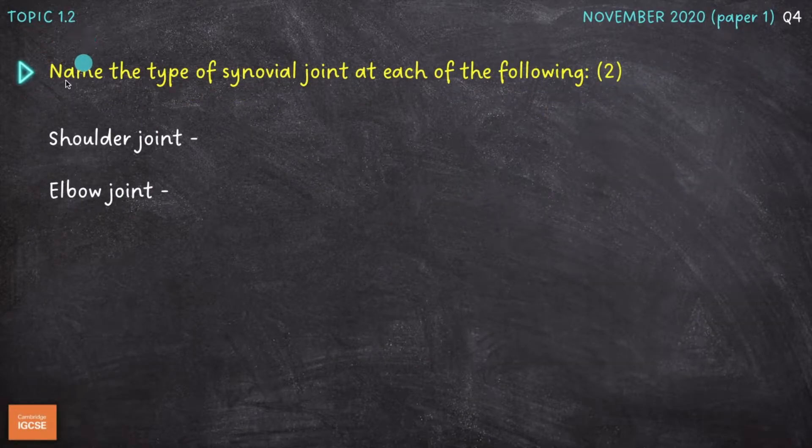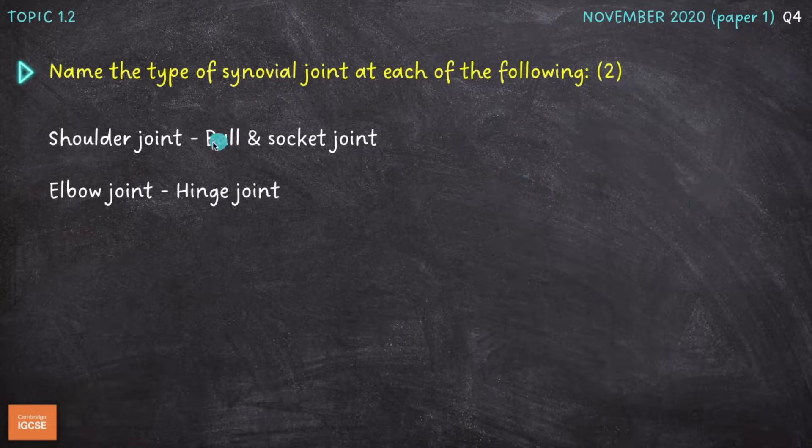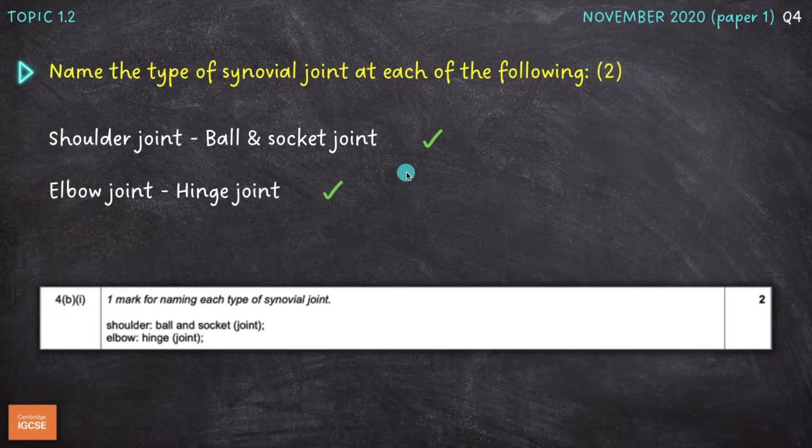Next question, topic 1.2. Name the type of synovial joint at each of the following. So the shoulder joint and the elbow. Which type of synovial or freely movable joint can we find at the shoulder and the elbow? So the shoulder is a ball and socket joint, and the elbow is a hinge joint. These are the two types of synovial joint that you need to know about.